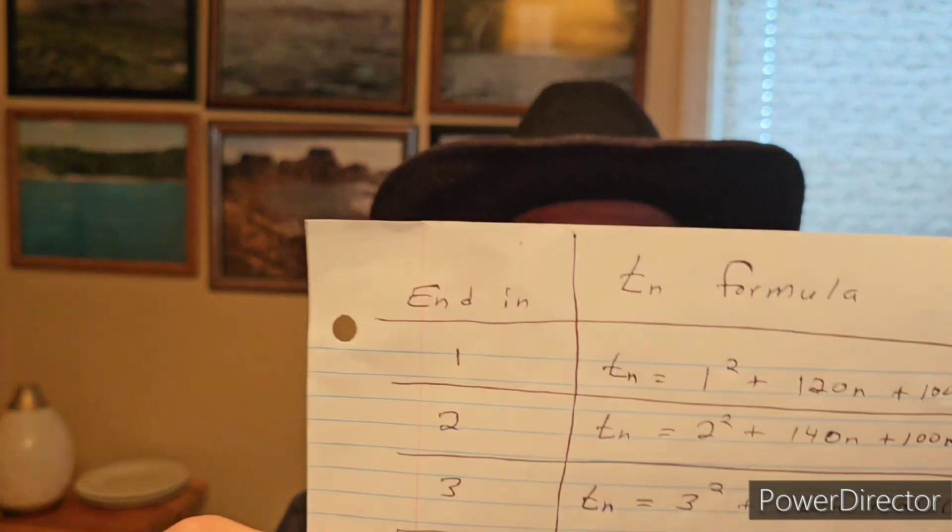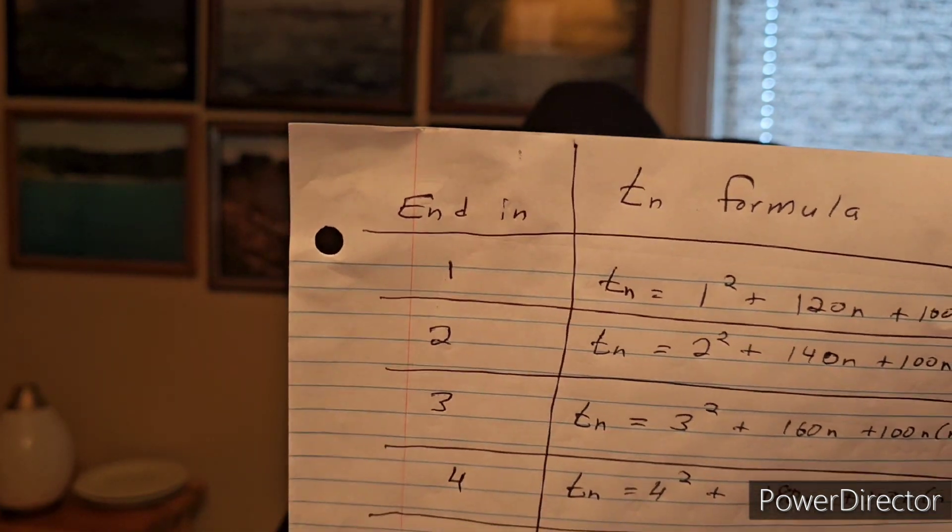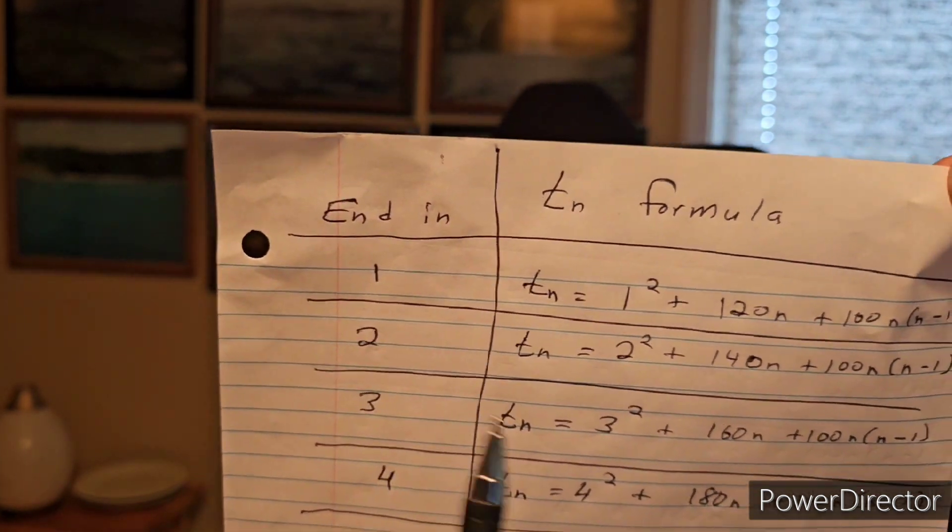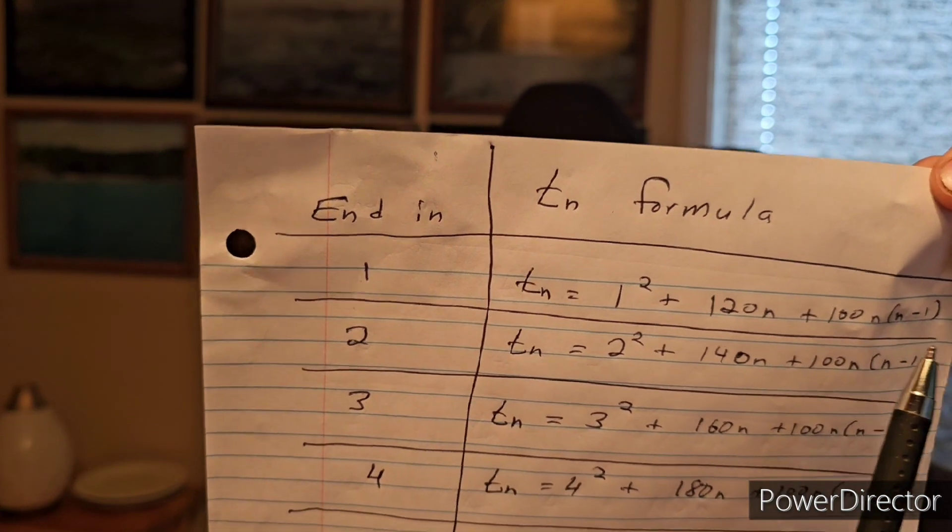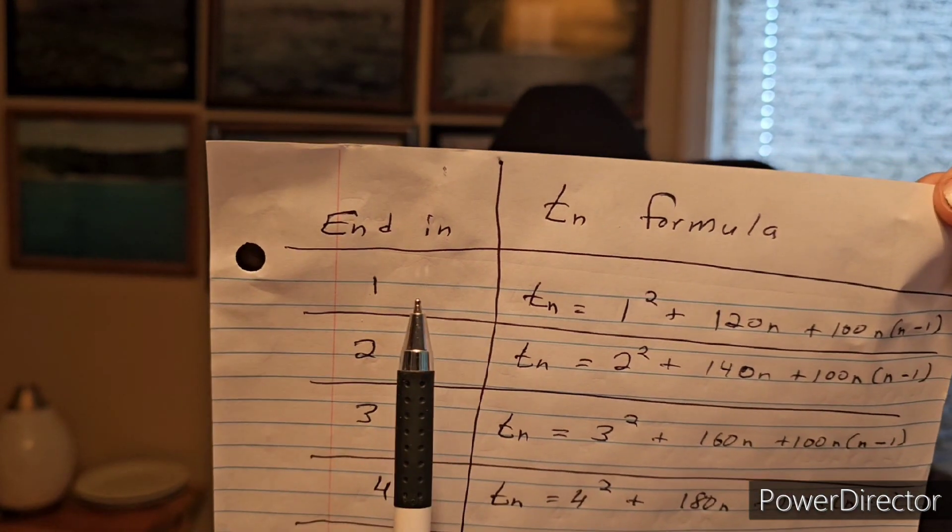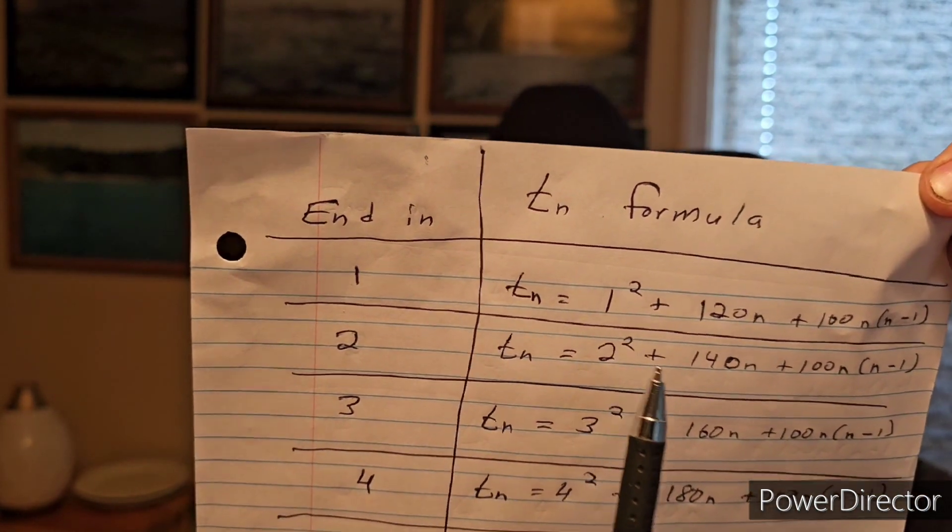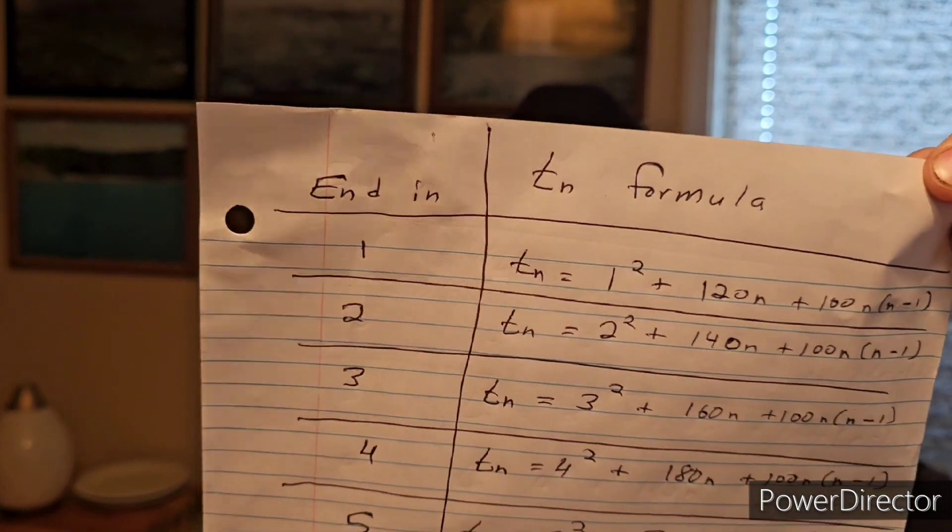Here's what happens here. If the number ends in 1, like the last digit, your tn is 1 squared plus 120n plus 100n times (n minus 1). If it ends in 2, the last digit, tn is 2 squared plus 140n plus 100n times (n minus 1).